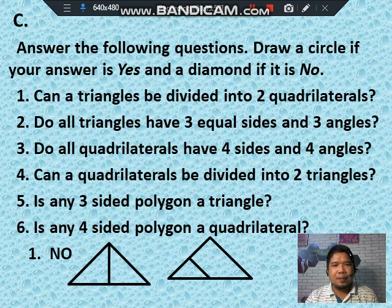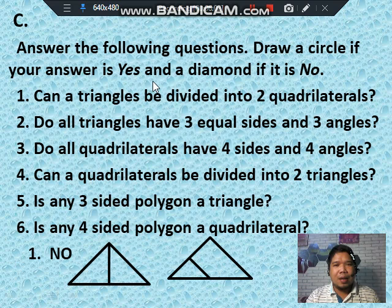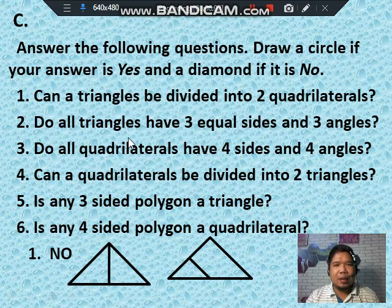That's all for today, class, about kinds of quadrilaterals. Again, the kinds of quadrilaterals are: square, rectangle, parallelogram, rhombus, and trapezoid.